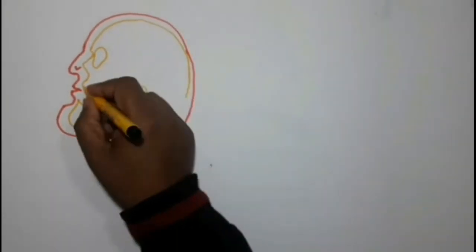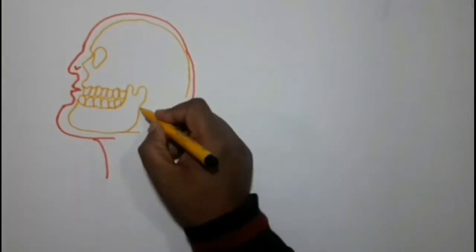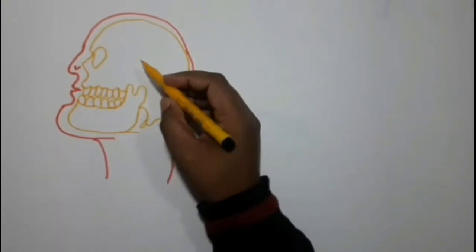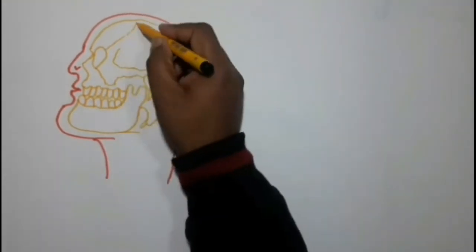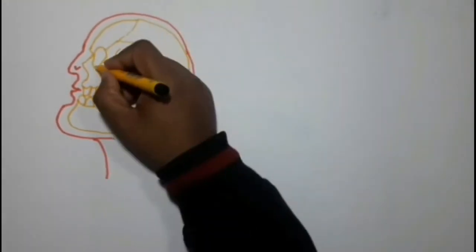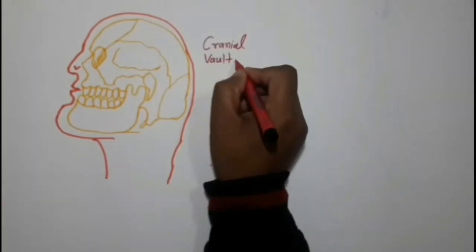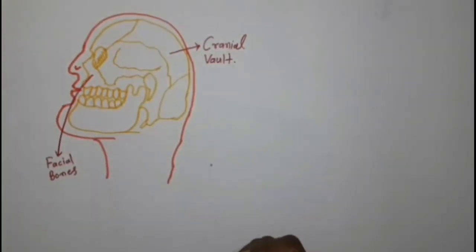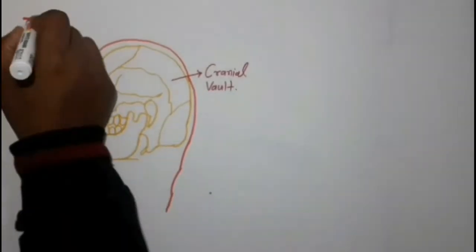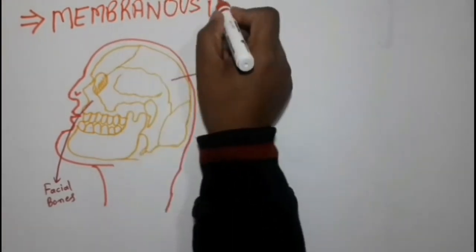Here is the head of the human body and here is the mandible, showing the lateral side of the head. So this is the lateral side of the head. Examples of membranous ossification include only two bones: the cranial vault and facial bones.